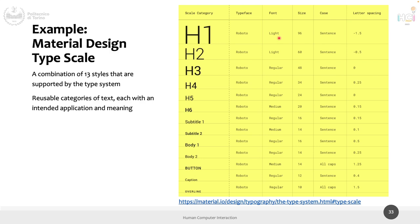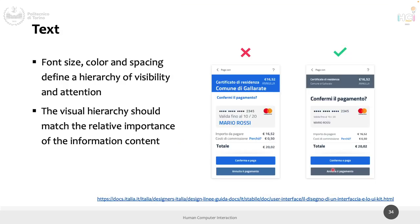Font size, color, and spacing help define hierarchy, and the hierarchy should match the relative importance of the content. Let's look at these two examples — they are in Italian, but one is recommended as a bad approach and the other as a good approach. Why is this one good and this one not? This is for getting a residency certificate from the municipality of Gallarate. It's the same text just presented differently — confirm the payment, credit card number, MasterCard, validity, owner, pay 16.52 euros, tax of 0.5, total 20, buttons for 'confirm and pay' and 'cancel payment,' a back button, and a question mark for help.